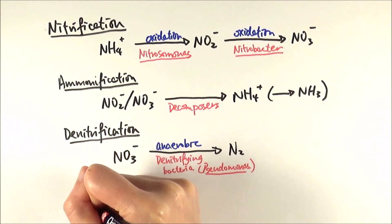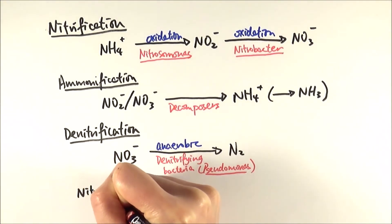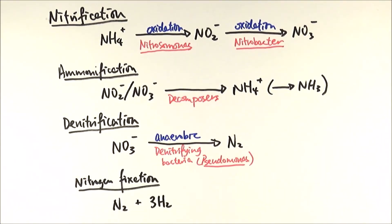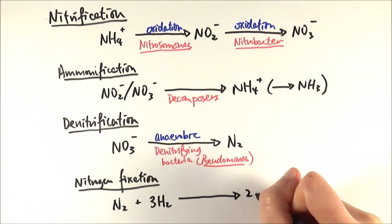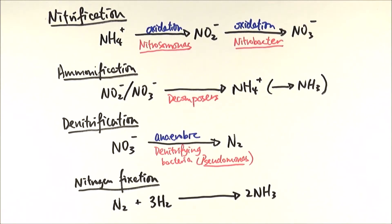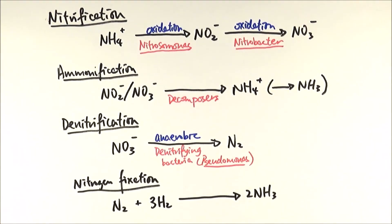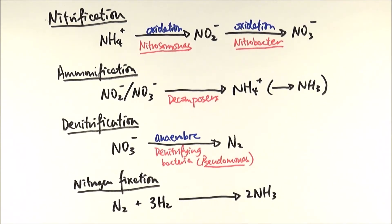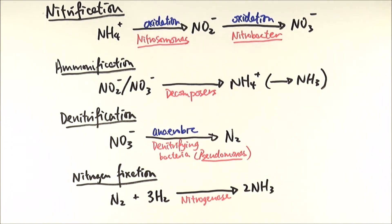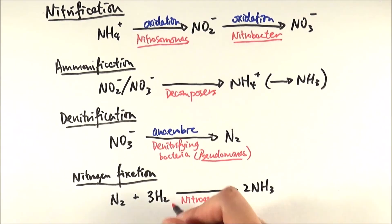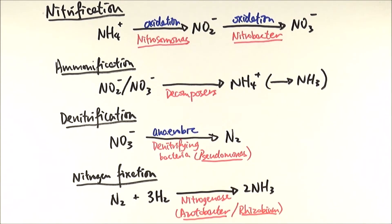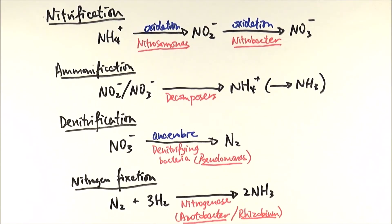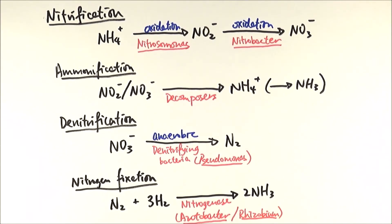Then finally, we have a reaction called nitrogen fixation. In this reaction, nitrogen gas and hydrogen gas in the atmosphere will react together to make ammonium. We will balance the equation, hence the 3 and the 2. So one nitrogen molecule will react with three hydrogen molecules to make two ammonia molecules. This reaction is catalyzed by an enzyme called nitrogenase, and it is found in bacteria such as azotobacter and rhizobium. And these are the four chemical reactions involved in the nitrogen cycle.